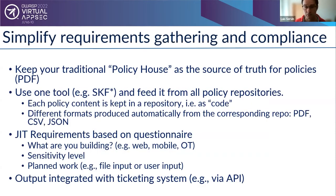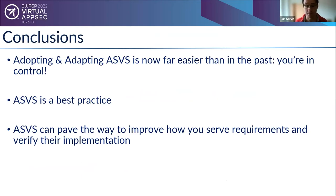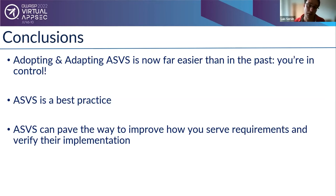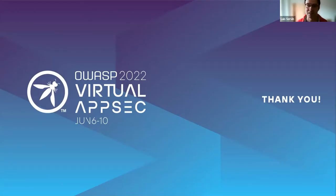So keep your policy house — you still need it — but serve your requirements in a way that's friendly to your consumers. If possible, ask your consumers what they need, serve them just what they need, and integrate with your ticketing API for demonstration of compliance. Adopting and adapting ASVS is actually not that hard now that I've shown you the path. ASVS is definitely best practice in the industry — there's no need to create your own. And if your company goes this way, you can change the way it does policy and compliance and move towards policy as code.